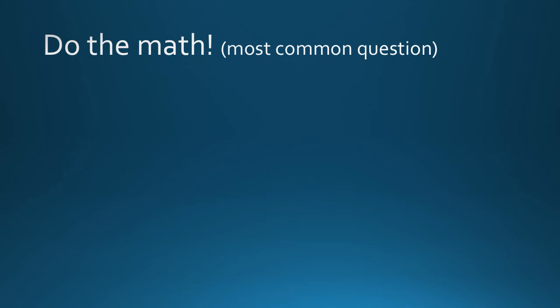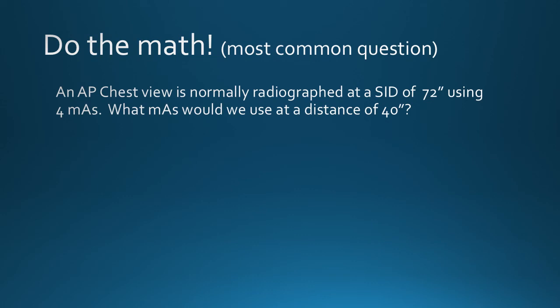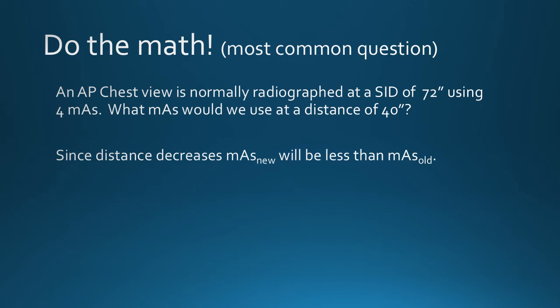In this question, you are given an MAS, mA, or exposure time to achieve an acceptable image. The question asks: what MAS, mA, or exposure time will you use to achieve a similar result at a new distance? The significant clue that this requires the second form of the inverse square law is that the MAS exposure variable is used. You will be compensating for a change in exposure intensity. In this situation the distance decreases, so radiation intensity increases; to compensate, you must decrease the MAS. Your answer will be less than 4 MAS.